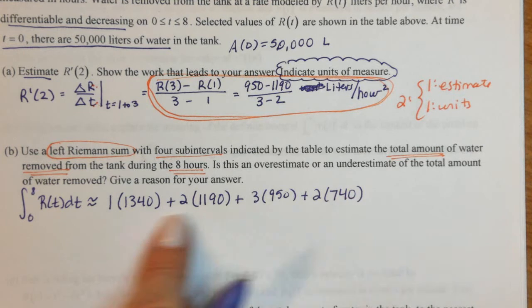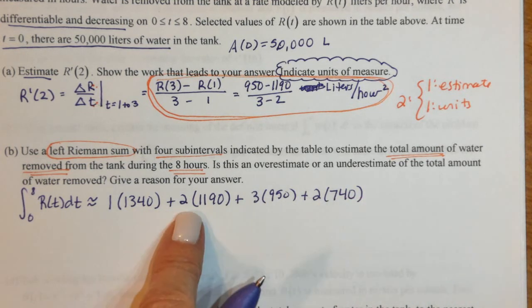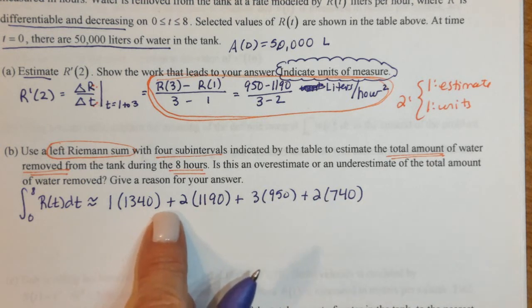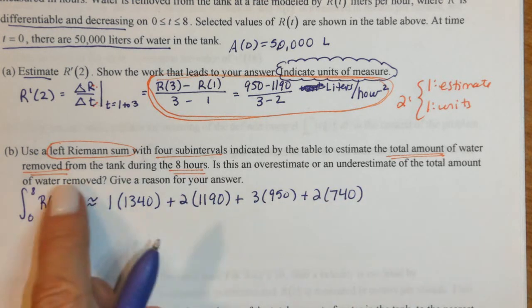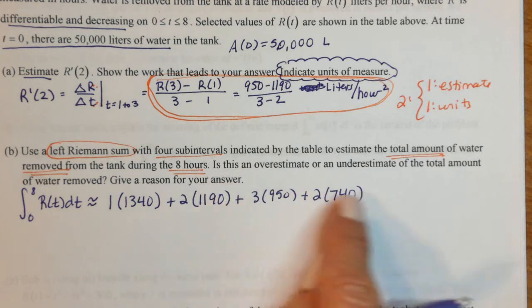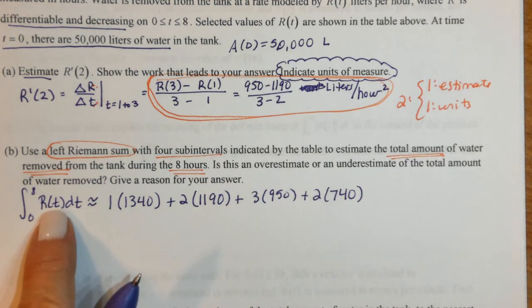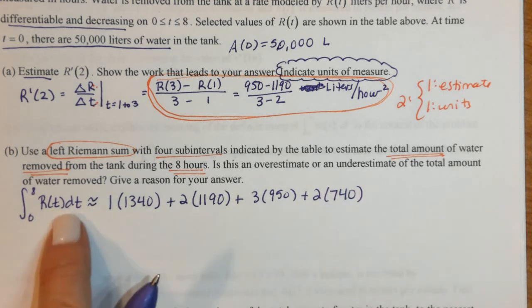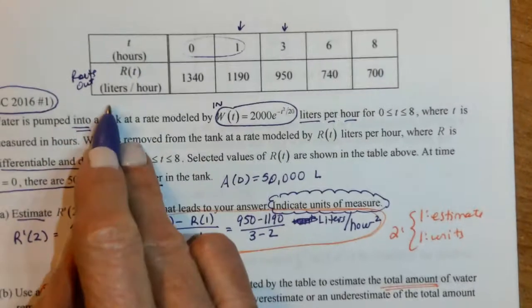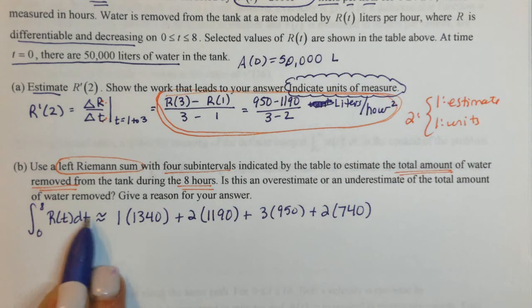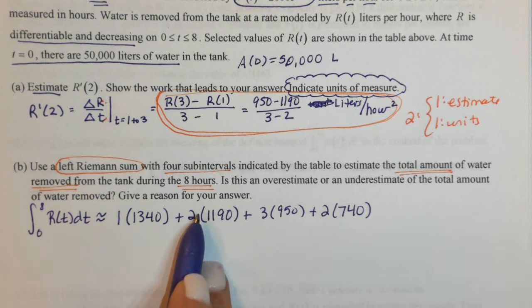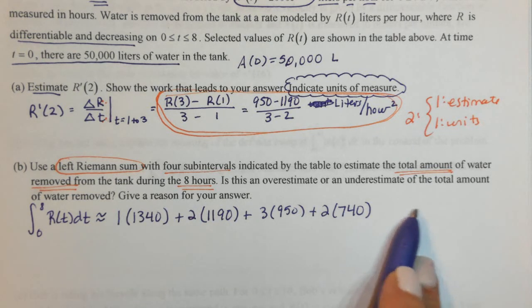Do not add these up — don't use your calculator for this even though it's calculator active. There's no good that could come from that. They didn't ask for units, so I'm not giving units. But if they had asked, R is in liters per hour, times hours, which gives liters.